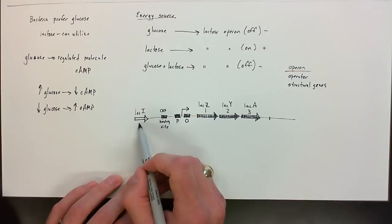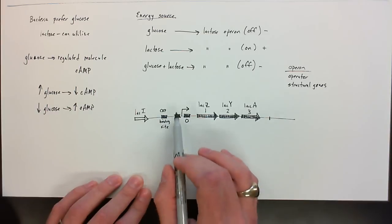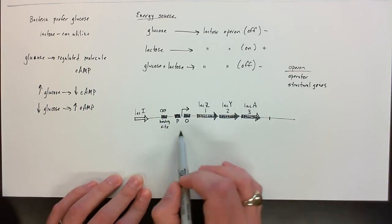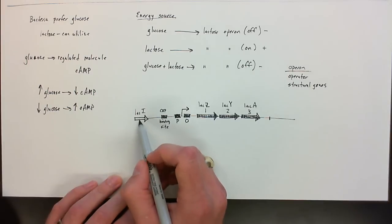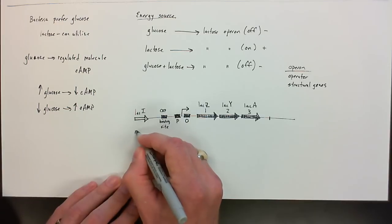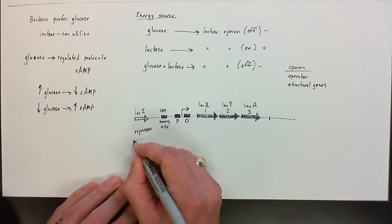What we see over here to the left, which actually is not part of the operon itself, the operon is kind of defined by the promoter and the structural genes. Over here, though, is another gene that's involved, and it makes a protein called a repressor. And specifically, this lac I gene creates what we call the lac repressor.